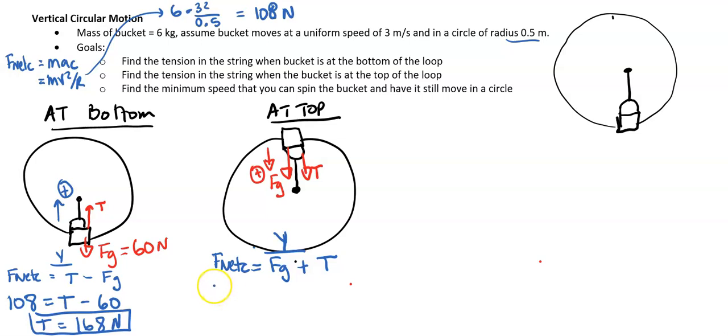So when we set that up, we have F net C equals, and towards the center of the circle now is positive in this case, equals FG plus tension. F net C is going to be M A C, M V squared over R, which we already did. And that turned out to be 108 plus FG we know is 60 plus tension. Go ahead and do some math. And I get tension to be 48 newton.